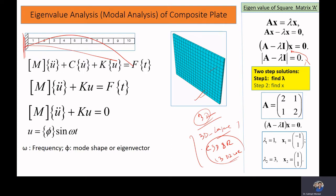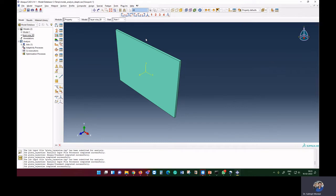We learned how to get the frequency and mode shapes for a composite plate using a 3D solid element in a single layer or by defining the property in a multi-layer. In this lecture, we are going to learn how to model a composite using a shell element — that is a 2D solid element — defining properties in a single layer and then in a multi-layer, and we will compare the results.